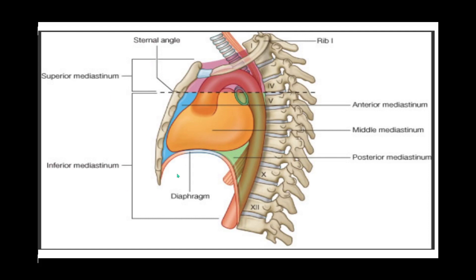The mediastinum is divided mainly into two parts: the superior mediastinum and the inferior mediastinum. If you draw an imaginary line across the sternal angle — the sternomanubrial angle, or the angle of Louis — and trace it posteriorly through the fourth intervertebral disc, that imaginary line divides the mediastinal cavity into a superior and an inferior mediastinum.